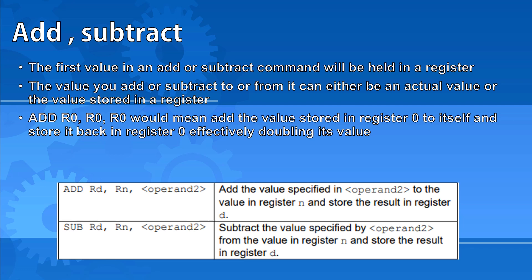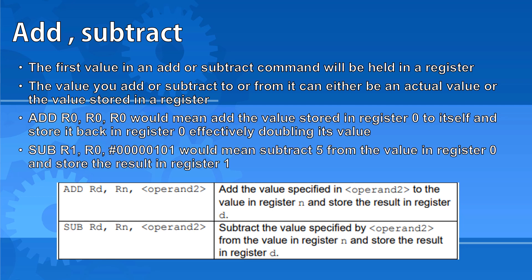The command SUB R1, R0, #00000101 would mean subtract 5, the value 5, from the value in register 0 and store the result in register 1.